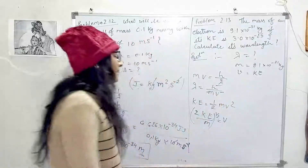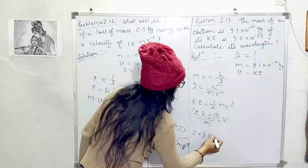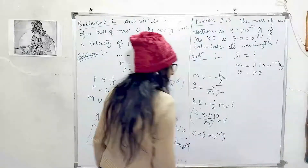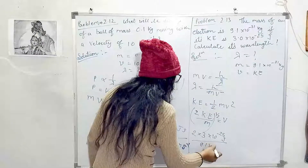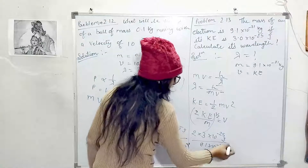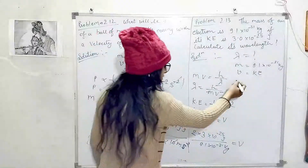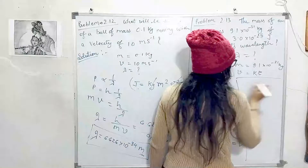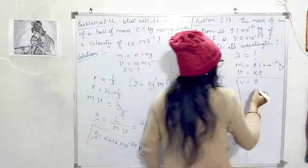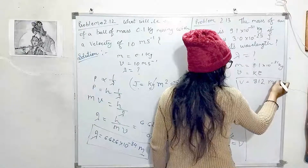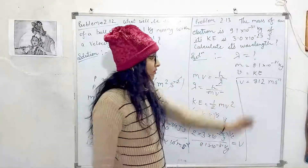Substituting values: 2 × kinetic energy = 2 × 3 × 10⁻²⁵ joule, divided by mass = 9.1 × 10⁻³¹ kg. Solving this gives the velocity as 812 meter per second inverse.